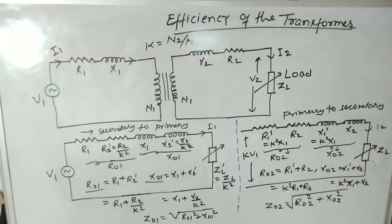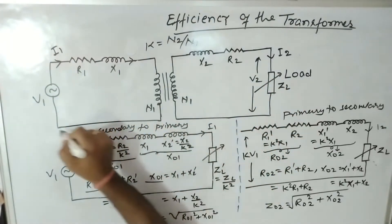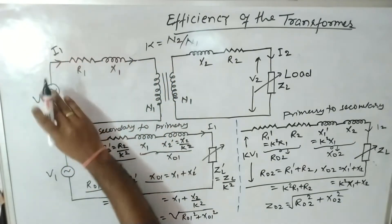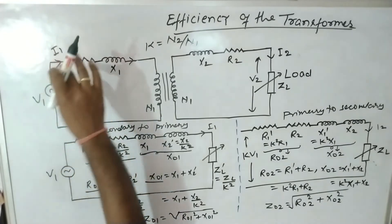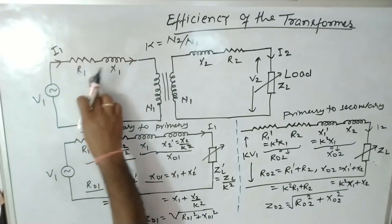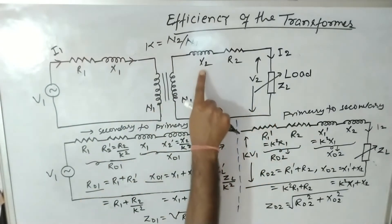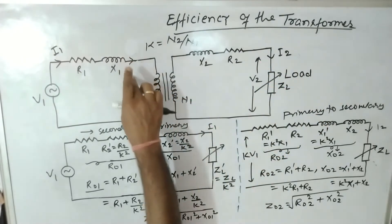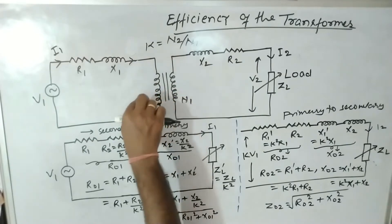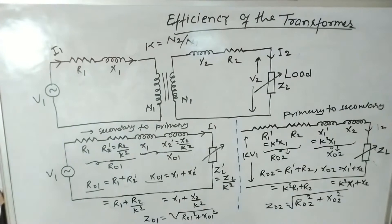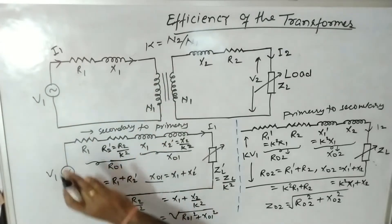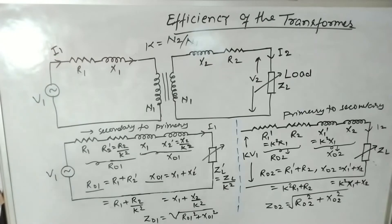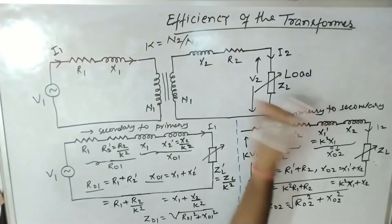This is the single line diagram for the transformer, in which we have the primary side and the secondary side. On the primary side, we have a voltage source, primary resistance R1, and leakage reactance X1. On the secondary side, X2 is the leakage reactance and R2 is the resistance. I have not included the parallel path R0 and Xm here, because for load operation that part plays no role in the copper loss discussion.